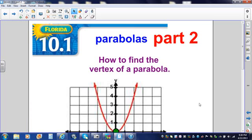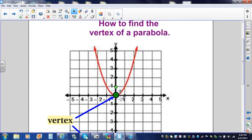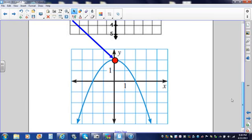Alrighty, let's jet to today's lesson. Today's podcast is going to be on Lesson 10.1, Part 2. We're going to talk about how to find the vertex of a parabola. Remember, when we're talking about a parabola, it is a V or U shape. It does not make a straight line. And the vertex is either going to be the bottom of the parabola, or the vertex can be the top of the parabola.